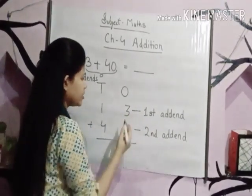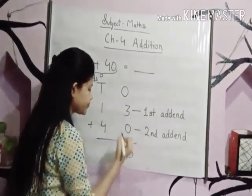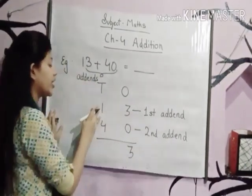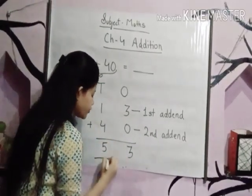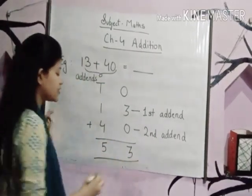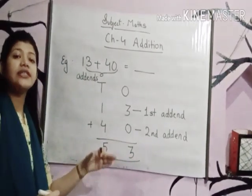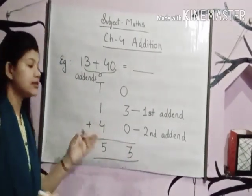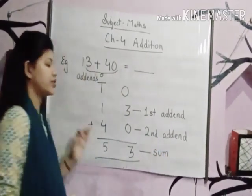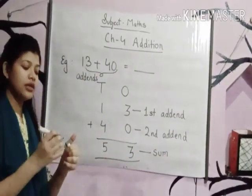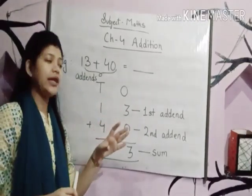Let's add: 3 plus 0 is equal to 3. 1 plus 4 is equal to 5. Now what we got as an answer? 53. So this number 53 is known as the sum.